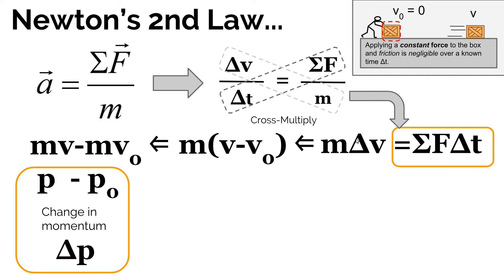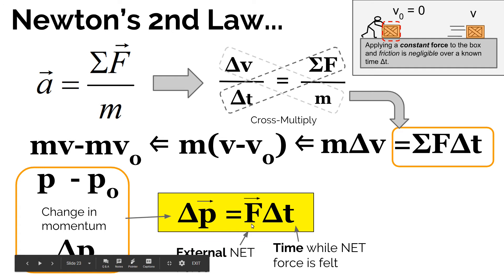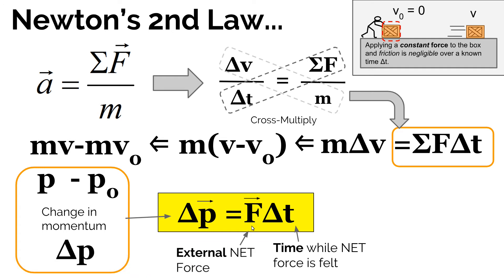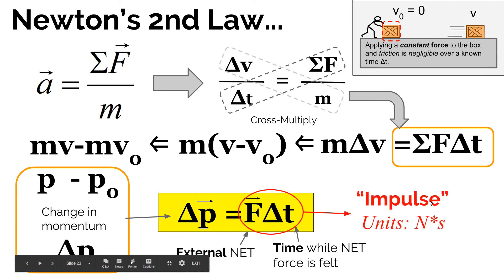The change in momentum equals the sum of the forces the object feels multiplied by the time it feels that force. This is the form on the AP equation sheet: the change in momentum of a system equals the net external force multiplied by the time that force is applied — where the force is the external net force applied to the system from outside it. In physics, the product of a force times time is called an impulse, and an impulse quantitatively predicts how much a system's momentum will change. The units of impulse are newton-seconds, which equal kilogram meters per second — the same as momentum units.